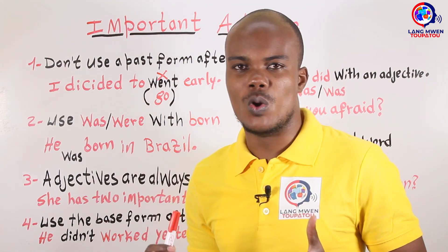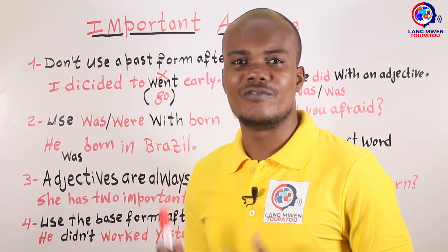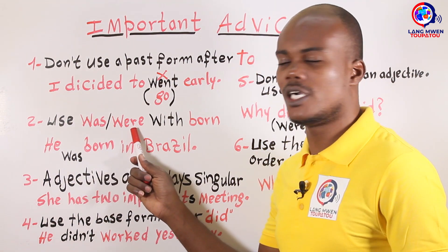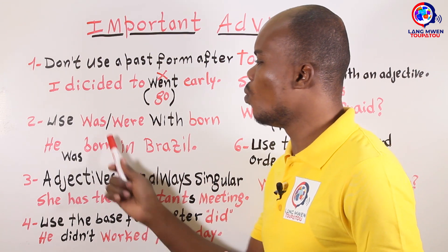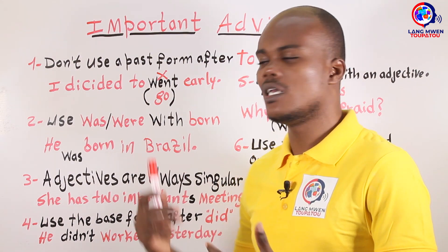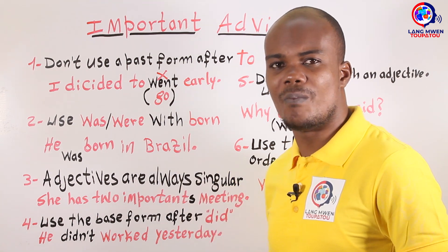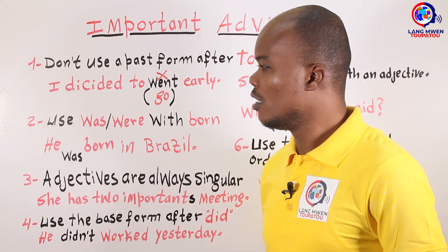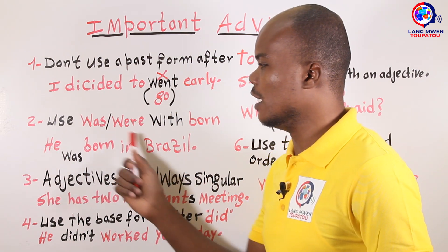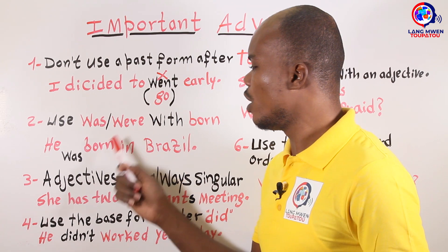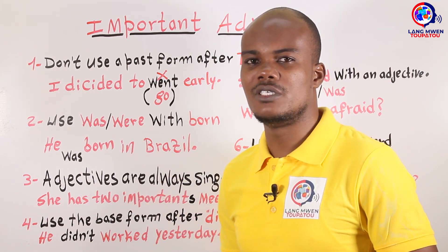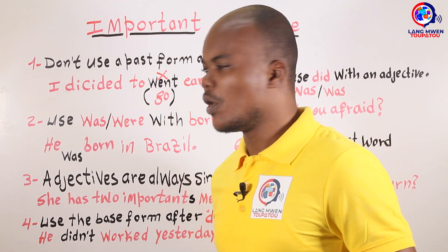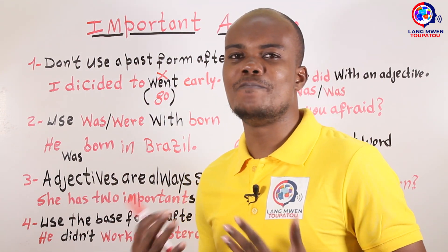Good. I think you're clear now on the first one. Let's go to number two. The second advice: use 'was' or 'were' with 'born.' You utilize 'was' or 'were' when you use 'born.' For example, you cannot say 'I born in Brazil.' Say 'He was born in Brazil' or 'You were born in Brazil.' And when you have a question, say 'Were you born in Brazil?' or 'Was she born in Brazil?'